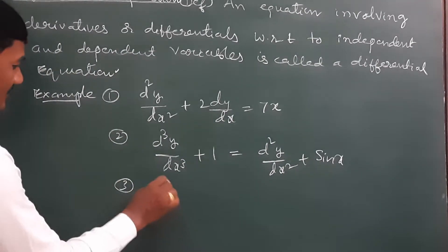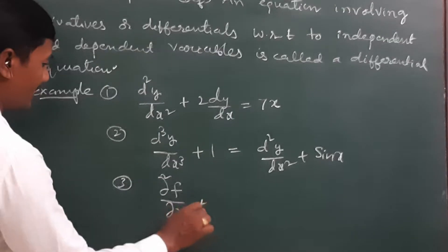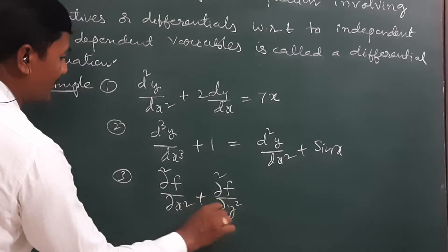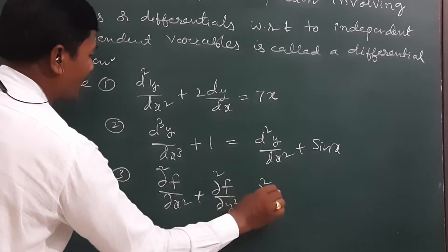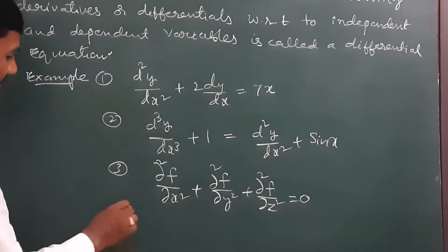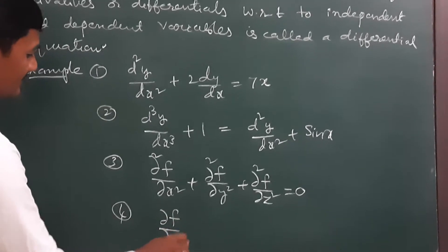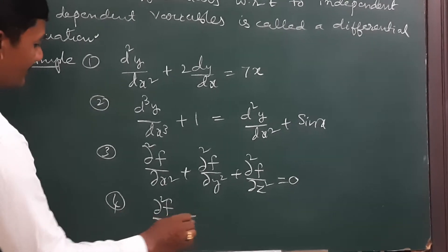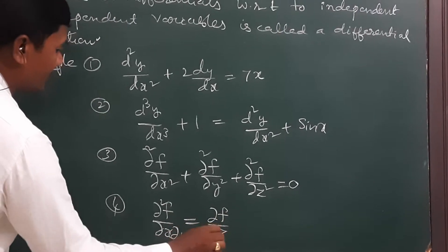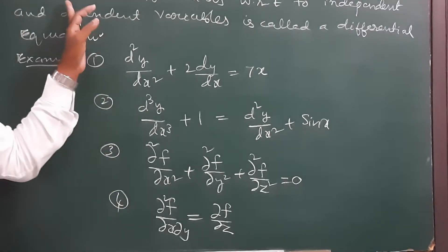Example 3: ∂²f/∂x² + ∂²f/∂y² + ∂²f/∂z² = 0. Example 4: ∂²f/∂x∂y = ∂f/∂z. These four are examples of differential equations.